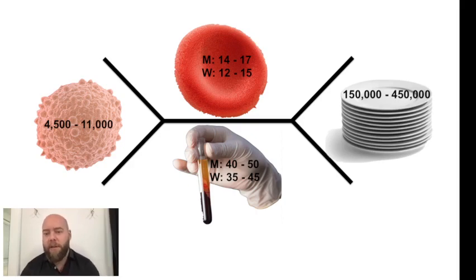Sometimes it's just marked as 4.5 to 11, but realize that that's in thousands on the lab values. On the far right is a huge stack of plates representing platelets, and the normal is 150,000 to 450,000. That's a big number represented by a big stack of plates.